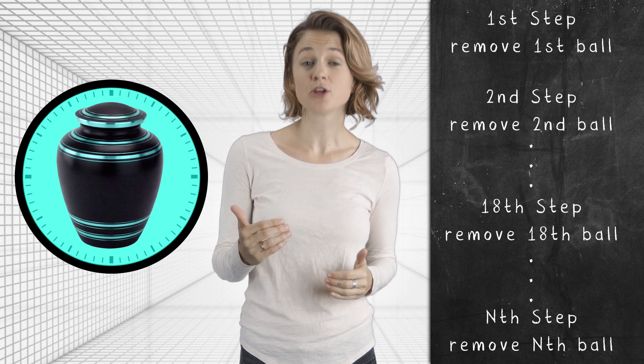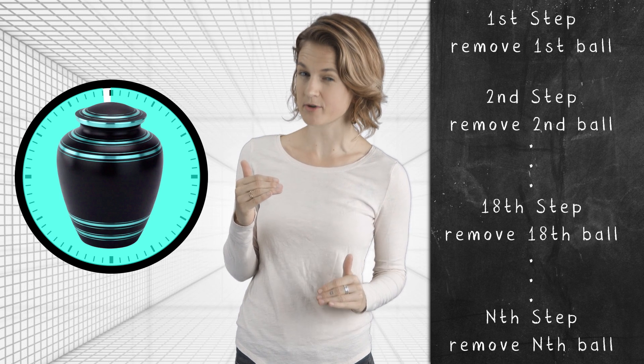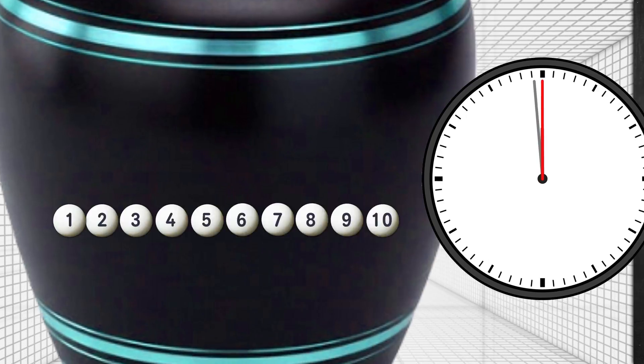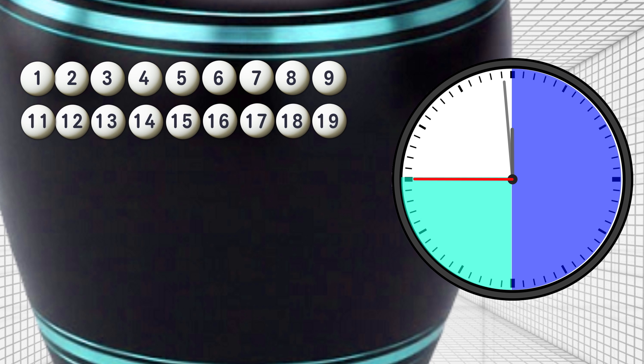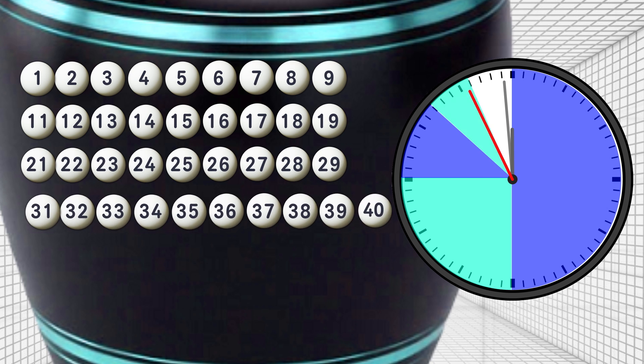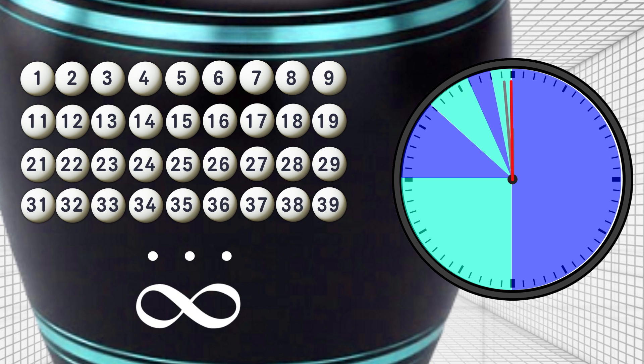What happens if, at each step, you remove the highest numbered ball instead of the lowest numbered ball? On step one, we add balls 1 through 10 and remove ball 10. On step two, we add balls 11 through 20 and remove ball 20, and so on. How many balls are in the urn at noon? Infinity. Infinitely many of the balls, any ball whose number is not a multiple of 10, will never be removed.